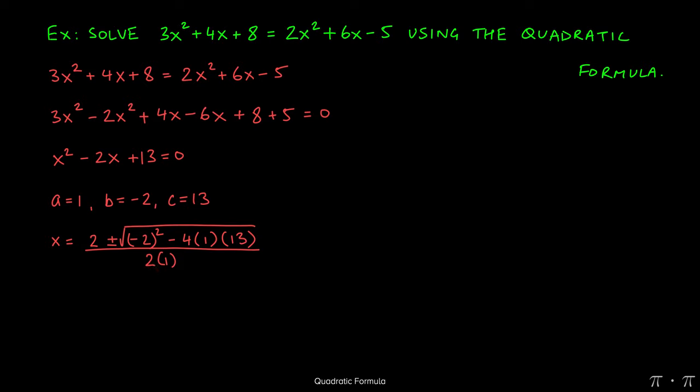Now we can simplify all the stuff on the inside of the radical. Negative 2 times negative 2 will give a positive 4. Negative 4 times 1 is negative 4, times 13 is negative 52, all over 2 times 1, which is just 2.